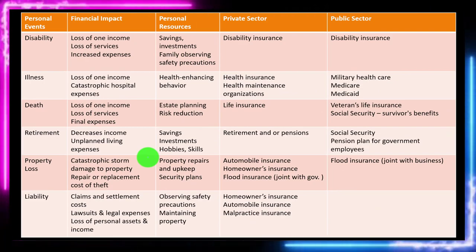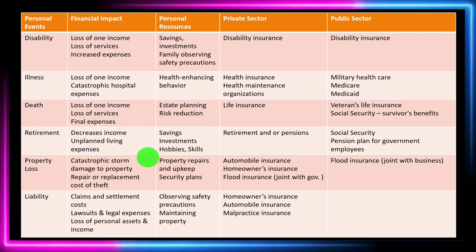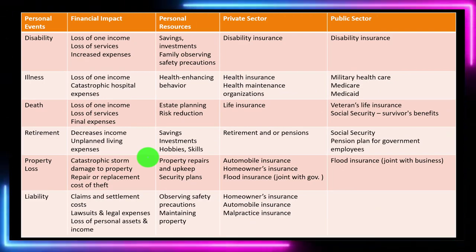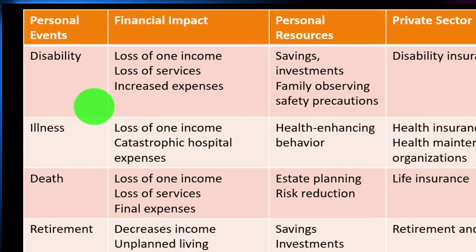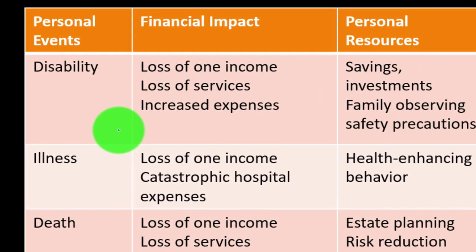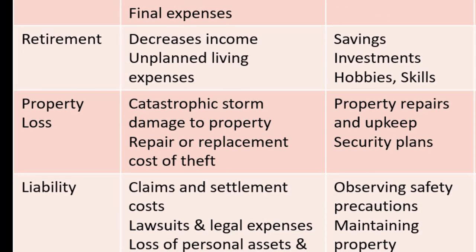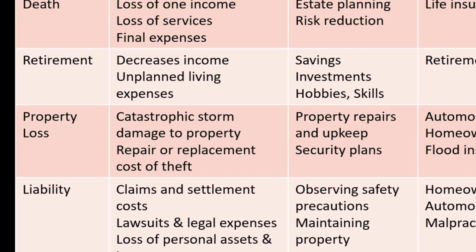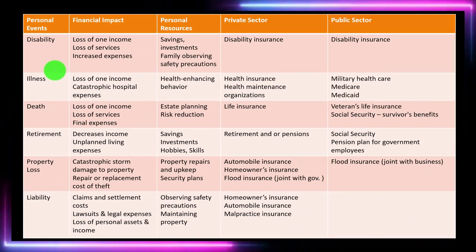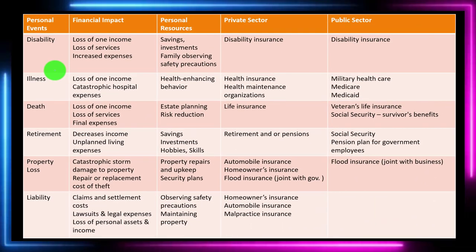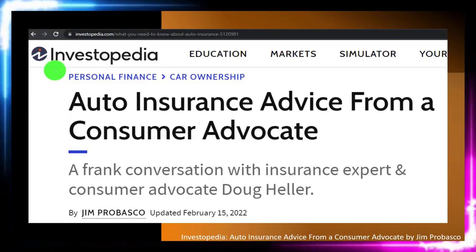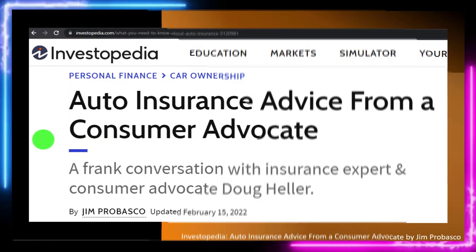The types of things we might want to think about with regards to risk mitigation would be things like disability, illness, death, retirement, property loss, and liability. We've talked about these in the past, but just to get a quick glimpse on those items.